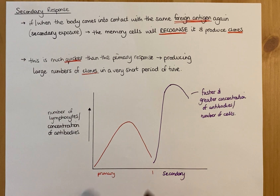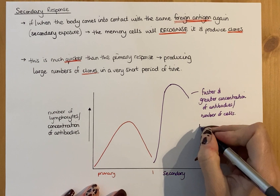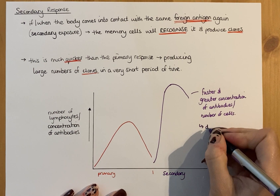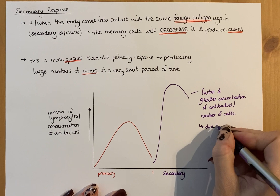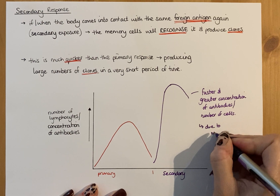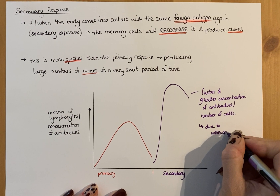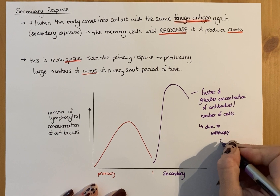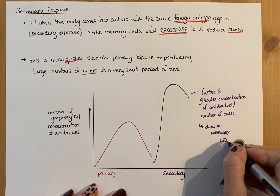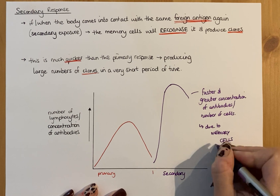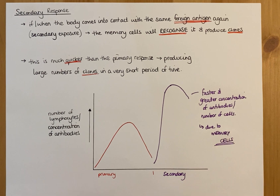Comparing primary and secondary responses is a common exam question. That faster, stronger secondary response is due to memory cells — either B or T lymphocyte memory cells.